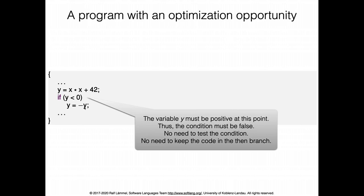Additionally, we don't really need this code — we should emit a warning that this code will never be executed. So depending on how you look at it, it's either an optimization or something we should warn about. We basically want to understand how we can write some form of abstract interpreter that gives us this information — namely that y is positive at that point. Once we know these things, we can easily implement optimizations or warnings.